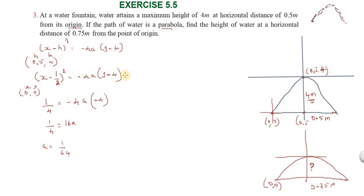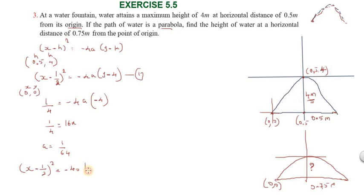So a equals 1/64. Substituting the value of a back into the equation, we get: (x minus 1/2) whole square equals minus 4 into (1/64) into (y minus 4).